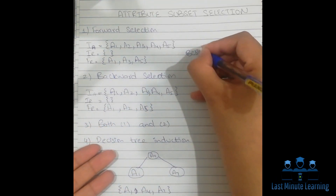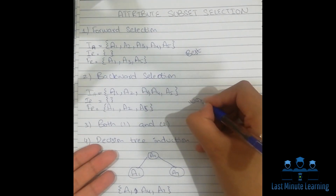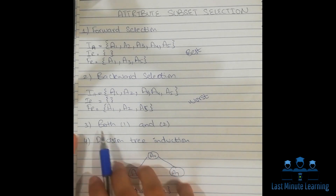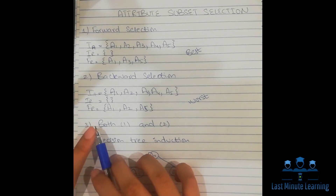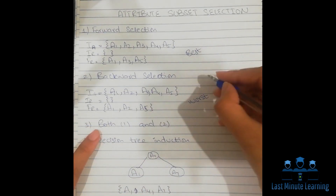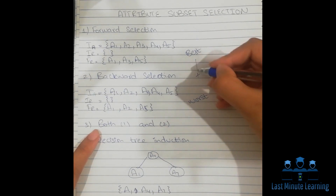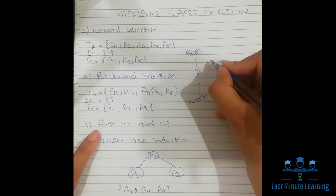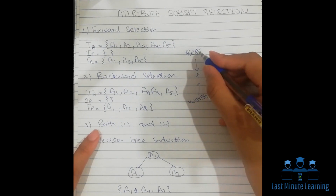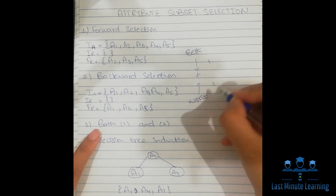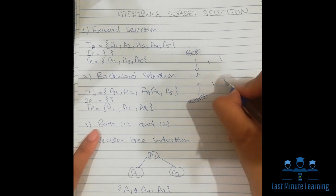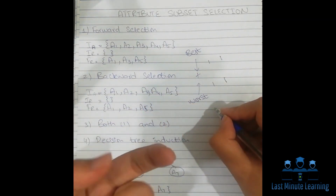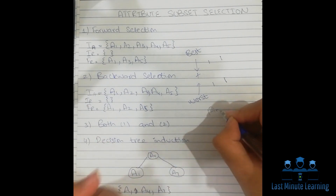The third form combines these two methods. We take a single attribute from the best and a single attribute from the worst, then another from best and another from worst, alternating like this to create our final reduced set.